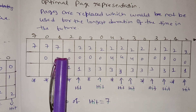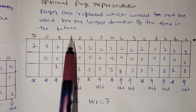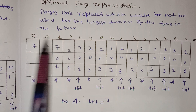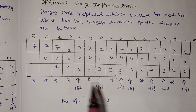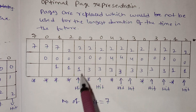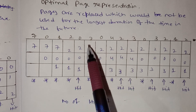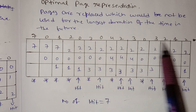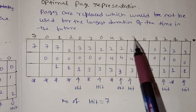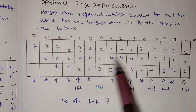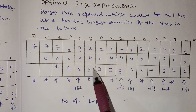Next, 2 comes — we replace 7 since it is used farthest in future. Now frames have 0, 1, 2. Then 0 is a hit. Then 3 comes — we look ahead and replace 1 since it is used farthest in future. Then 0 is a hit. Then 4 comes — we replace 2. Then 3 comes — 3 is already in frames, hit.